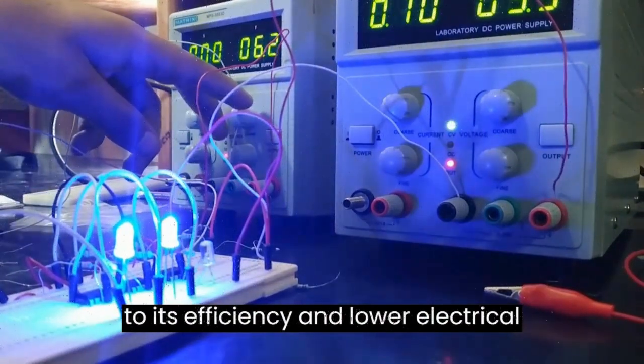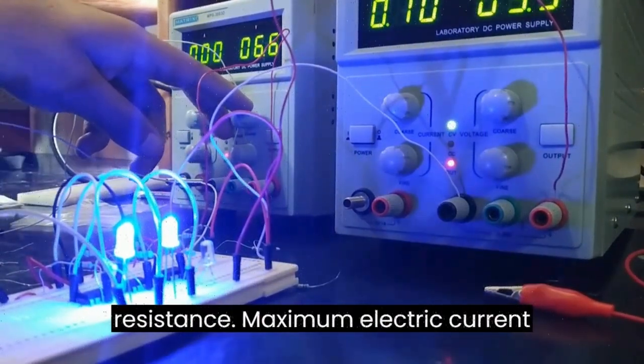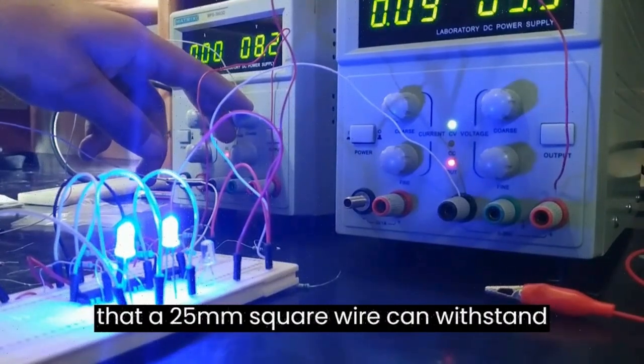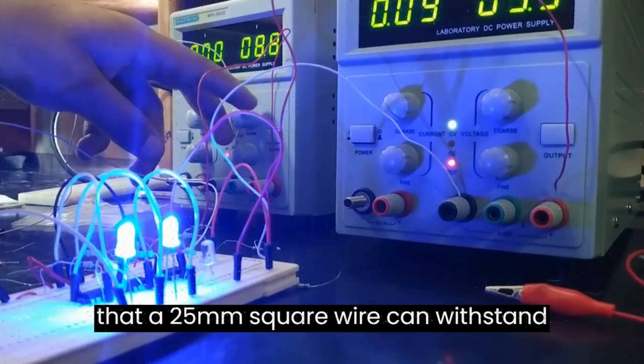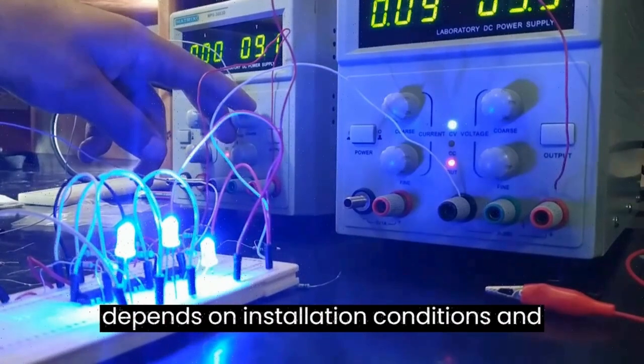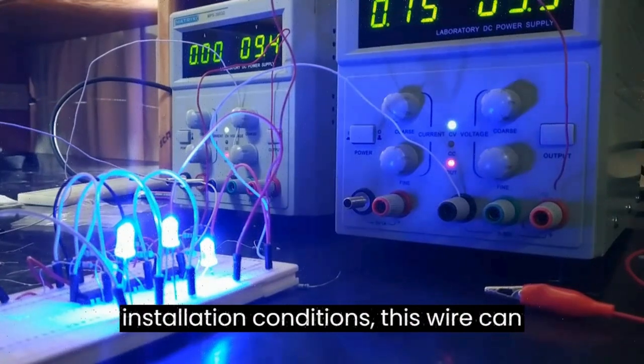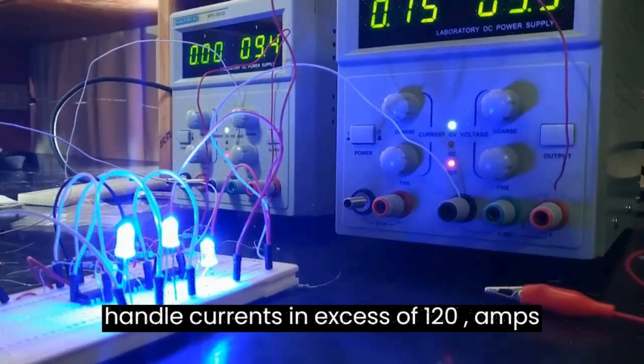Maximum electric current: The maximum electrical current capacity that a 25 millimeters square wire can withstand depends on installation conditions and local electrical codes. Under typical installation conditions, this wire can handle currents in excess of 120 amps, but the exact capacity may vary.